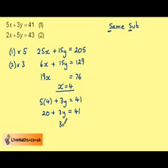Subtracting 20 from both sides gives 3Y is equal to 21, and dividing by 3 gives Y is equal to 7. So X is equal to 4 and Y is equal to 7.